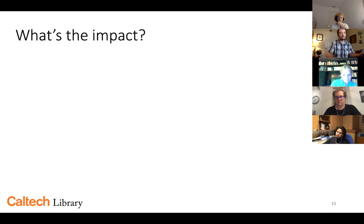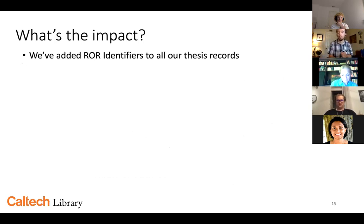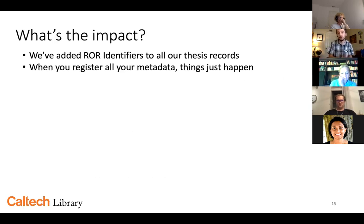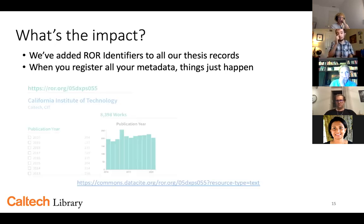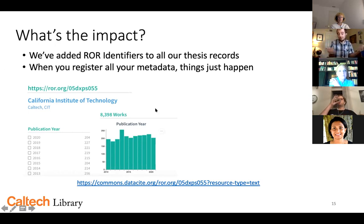But what's the impact? I've done all this technical work and extra programming — why do we care about switching from XML to JSON? Well, in our test version, we were able to add ROR identifiers to all of our thesis records. Because we had 4.3 version metadata available, we could add the ROR identifiers for affiliations. Theses are easy because all the affiliations are Caltech — we know that. The thing I love showing is: if you register all your metadata, things just happen. If you look at DataCite Commons today and go to Caltech, select text as your item type, you can see a graph of theses over time. We got this graphing for no work — it just behaved once we registered all the metadata.